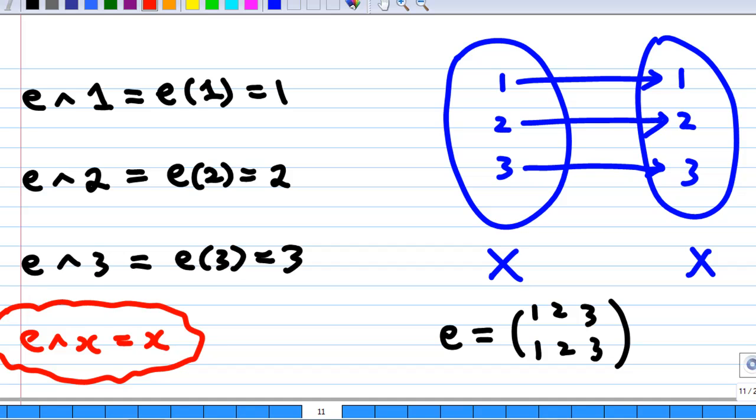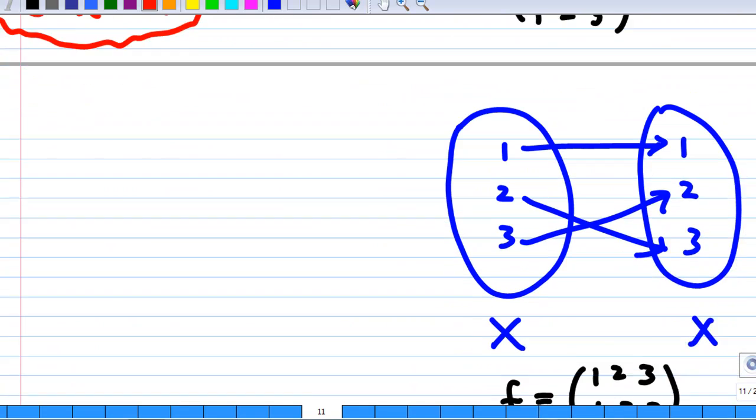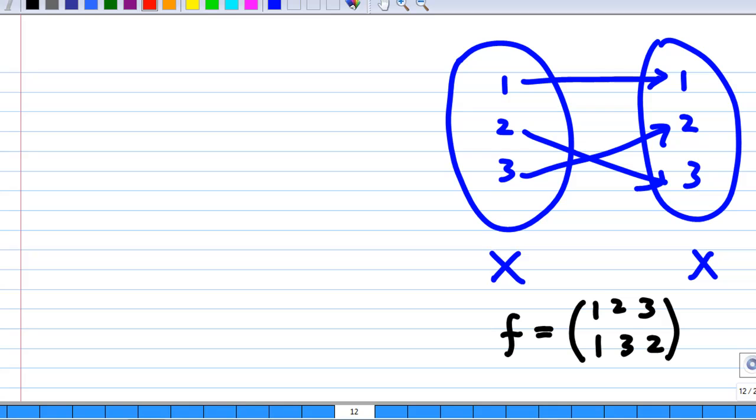Let's look at another element of G. How about f acting on 1? Since f is a permutation of X, so f acting on 1, naturally you can take the image of 1 under f. But the image of 1 under f, you can see from the arrow diagram, is 1.